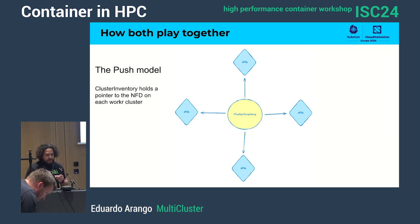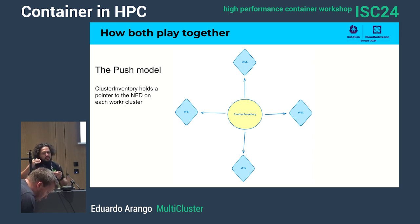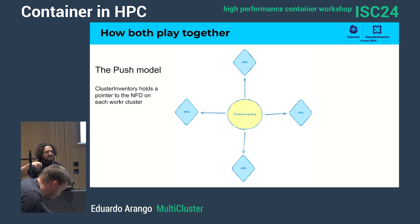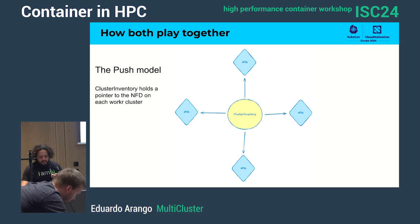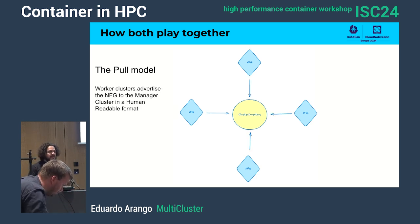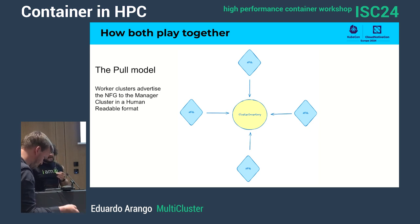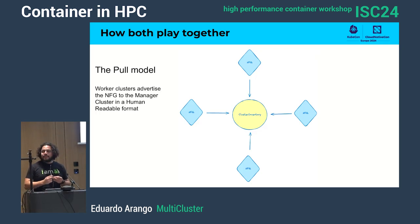We are proposing two models. One is what we call the push model, where the cluster inventory requests the node pools to the clusters, and each cluster is responsible for achieving what the management cluster is requesting — so each individual cluster will work towards getting those node pools. The pull model is that each cluster is independent and will just report back what they have. So this is what we are proposing, and with that I leave for the next speaker to open space for others. Thanks.